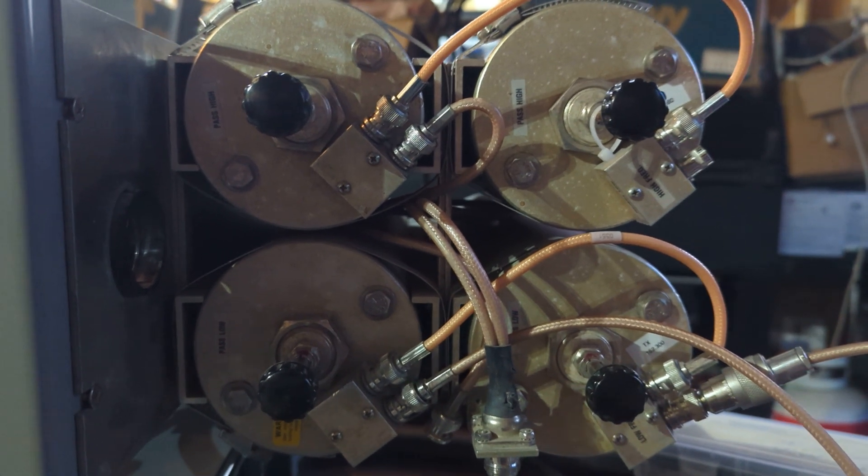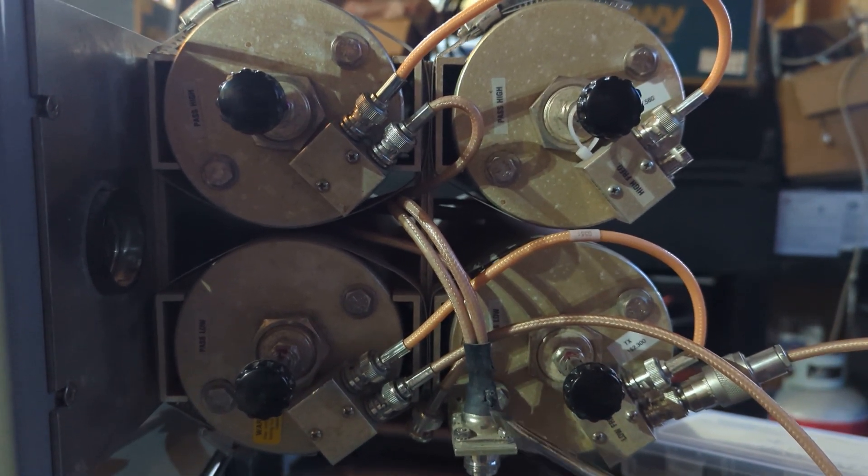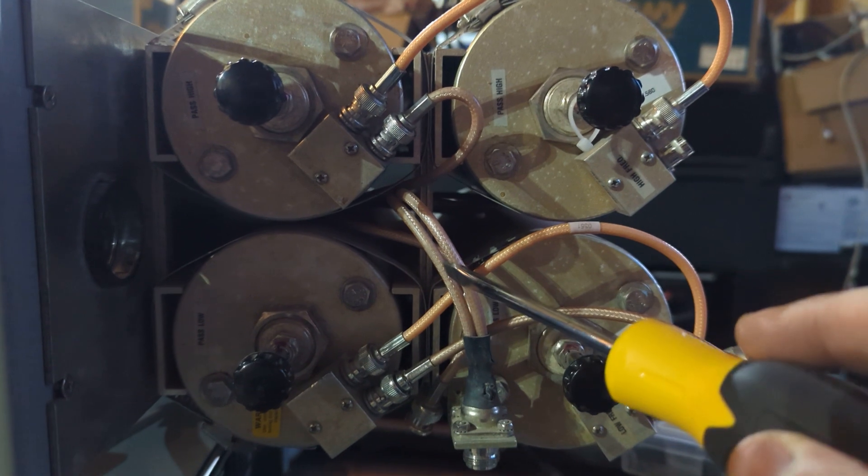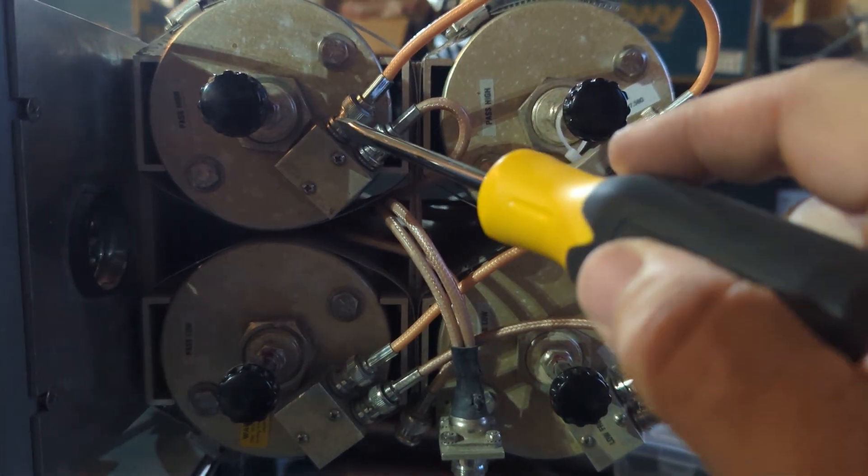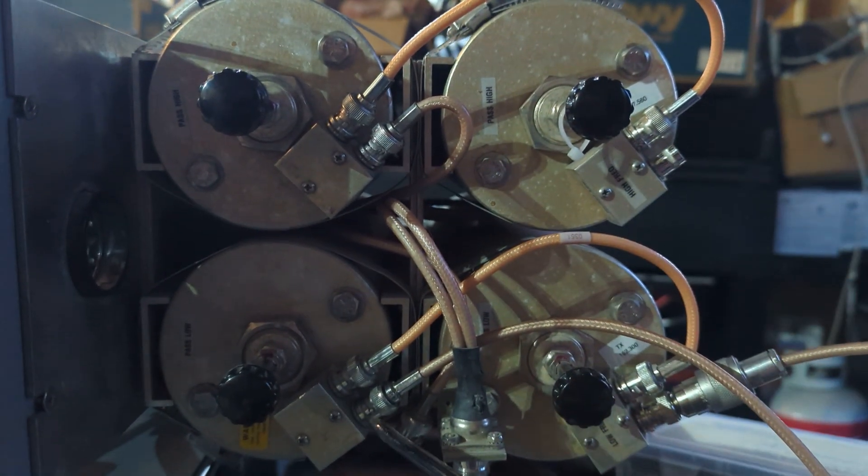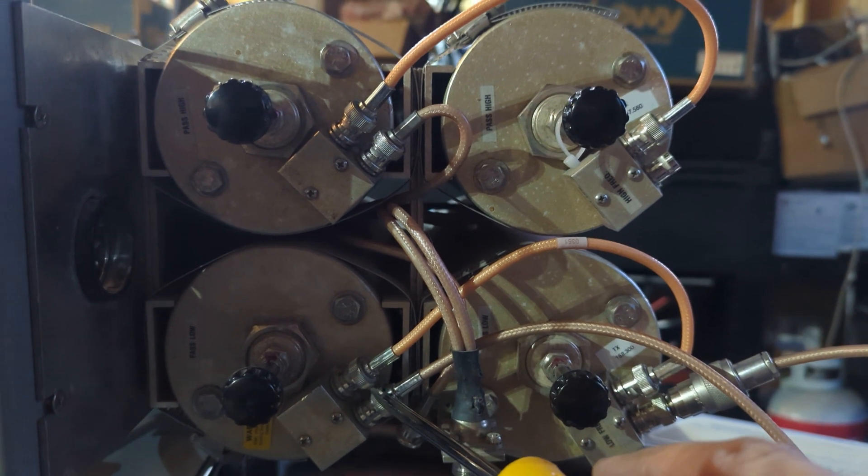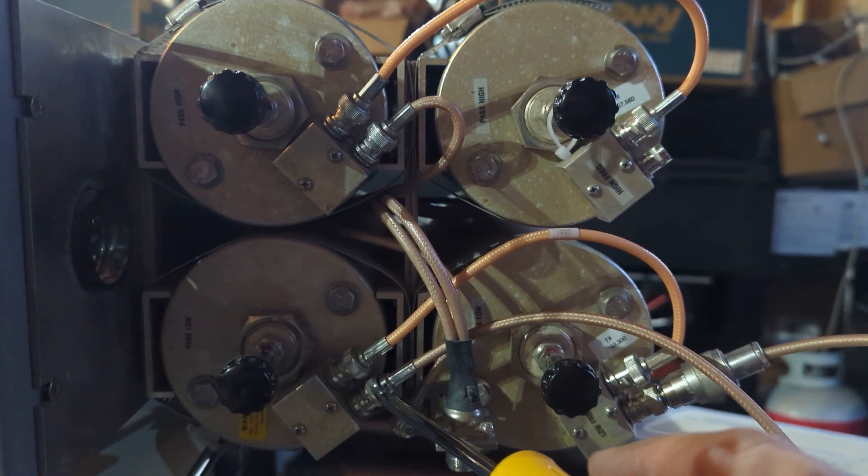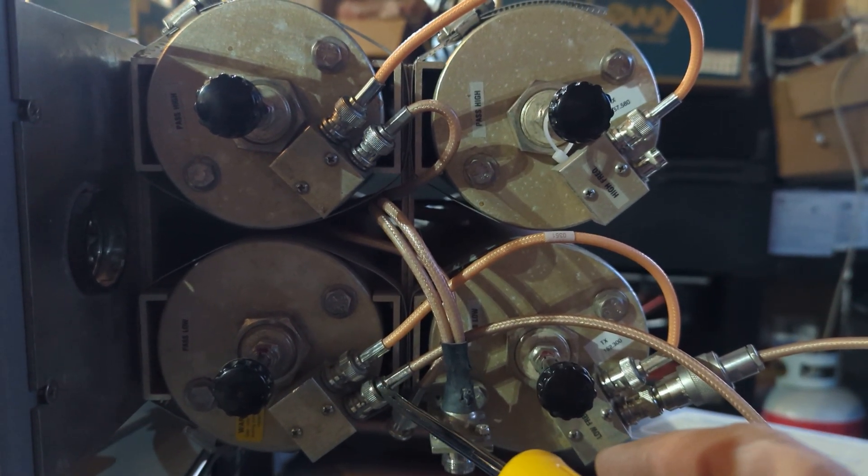So in this case what's going to happen with this duplexer is the signal comes in here and it goes down these two cables, splits in these two cables. And the signal is going to come into here and then the signal will come into here. And what's going to happen is that the signal is going to travel the least path of resistance.